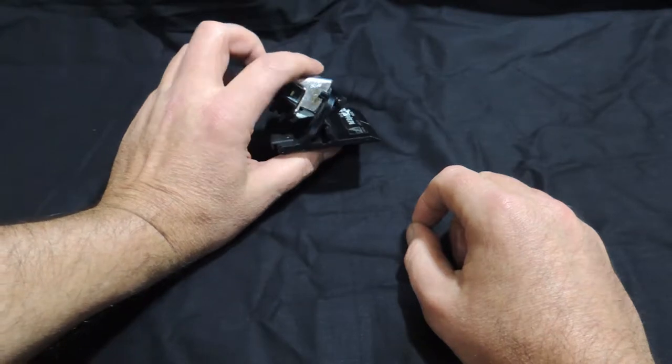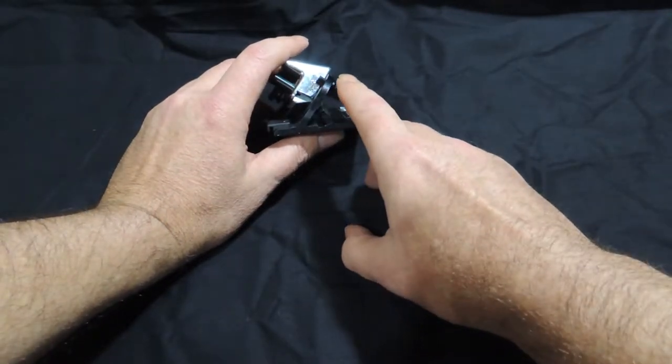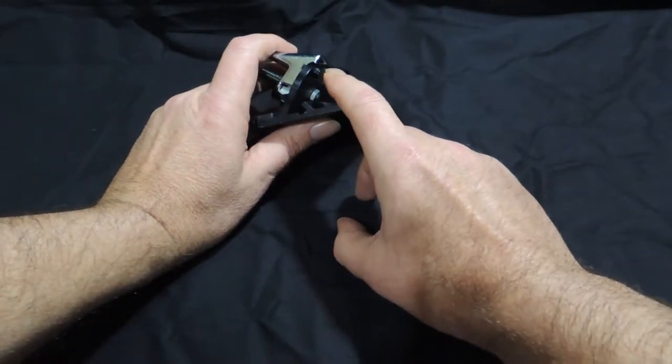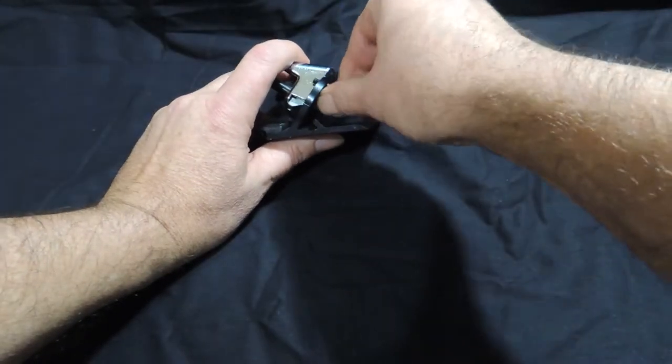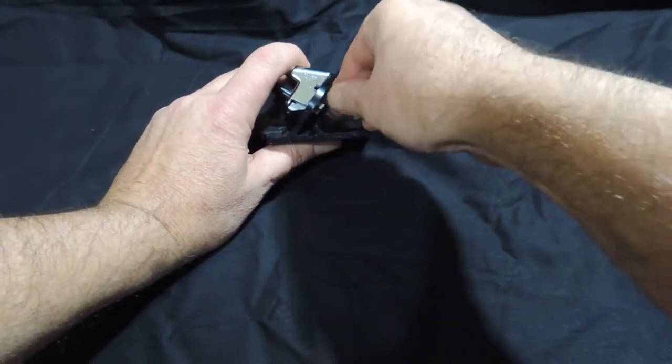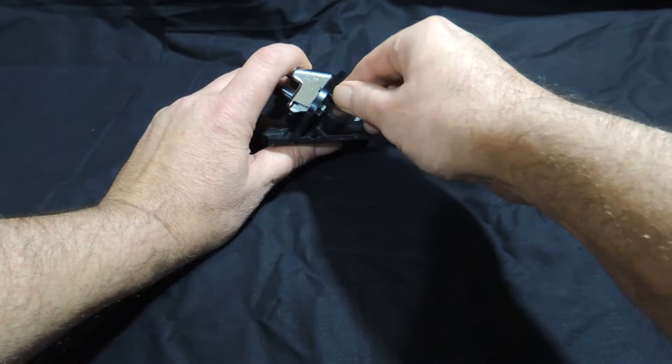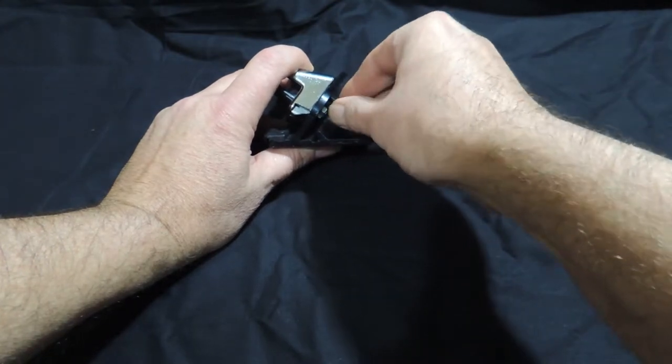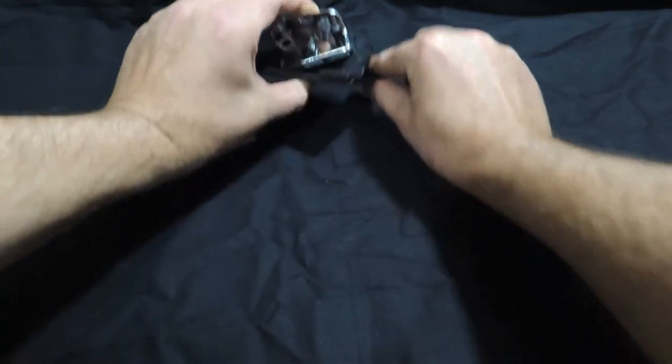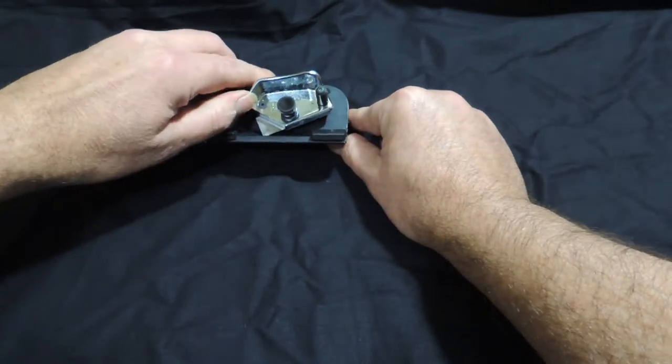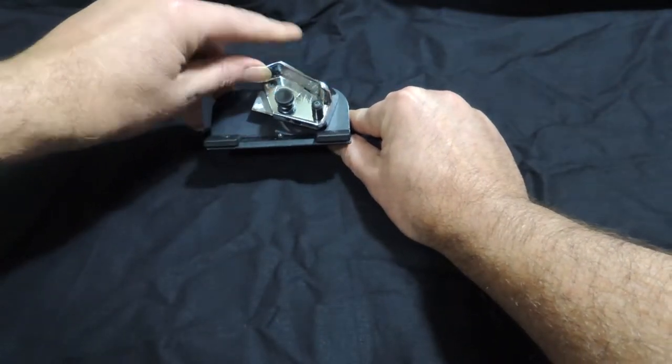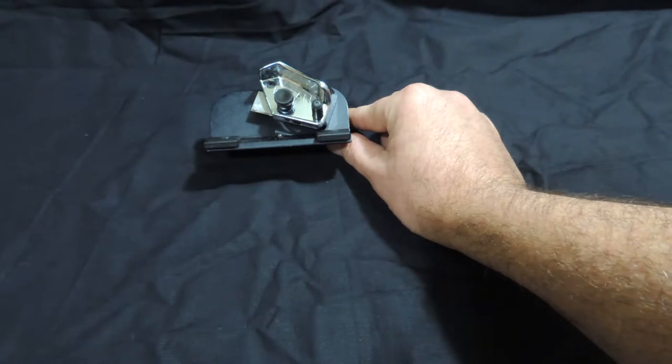So what we want to do is on the back we can see this thumbscrew and we want to unscrew that all the way. That will allow the cutting arm to come up and give us better access to the blade. Push the arm up and then we have complete access to the blade.